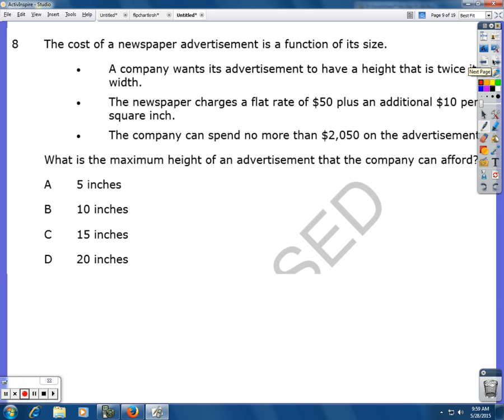Number eight. The cost of a newspaper advertisement is a function of its size. That means that the bigger it is, the more it's going to cost. The smaller it is, the less it's going to cost.